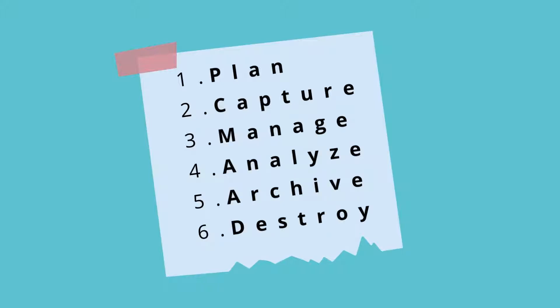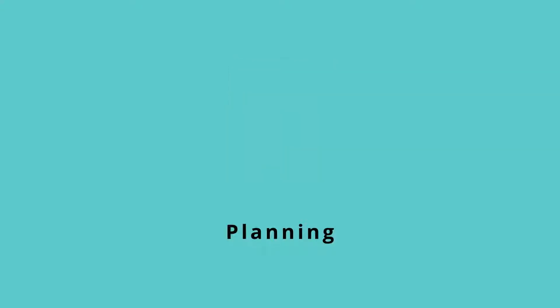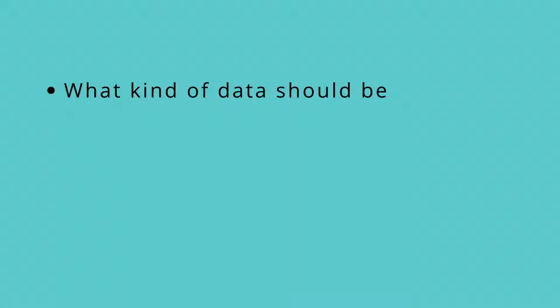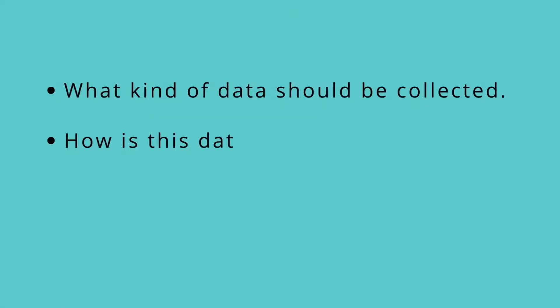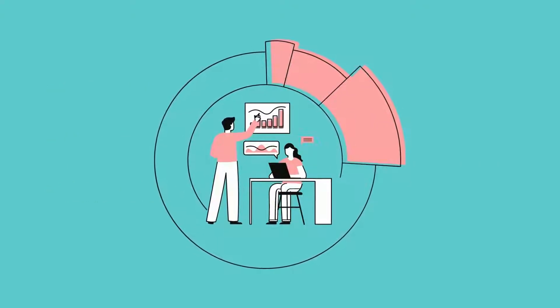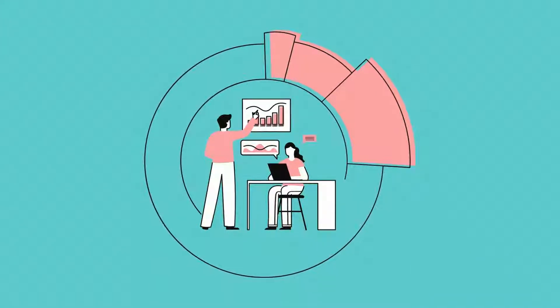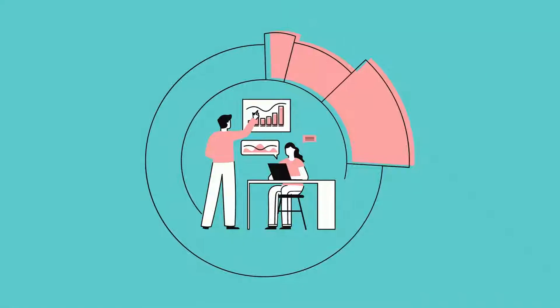Let's begin with the first phase: planning. This actually happens before starting an analysis project. During planning, a business decides what kind of data it needs, how it will be managed throughout its life cycle, who will be responsible for it, and the optimal outcomes. For example, a real estate agency wanted to get insights on how property prices were affected by the pandemic. In the planning phase, they decide to capture data on the number of houses, the price, and the areas in which these houses were sold. The agency also decided which teams should be responsible for collecting, storing, and sharing that data.